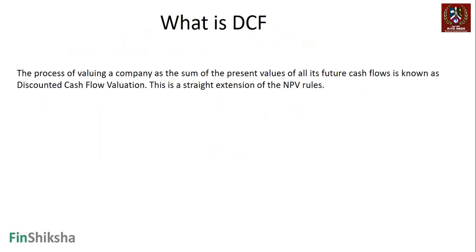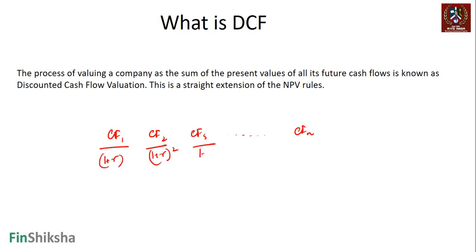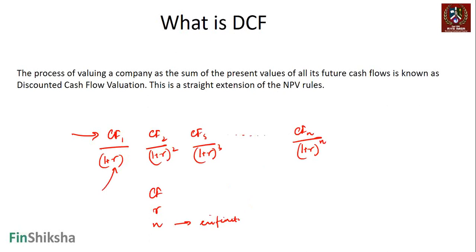DCF is the process of valuing a company using the sum of the present values of all its future cash flows. It's a straight extension of the NPV rules — a company gives cash flows CF1, CF2, CF3 up to CF-n, and we find their present value today. There are three nuances: the cash flow, the discount rate, and the time period — which in equity valuations is usually taken till infinity.